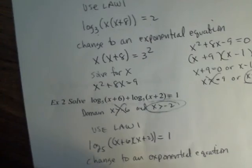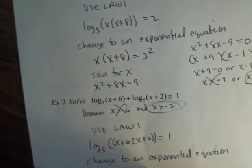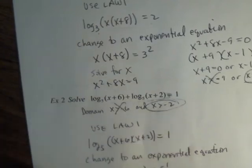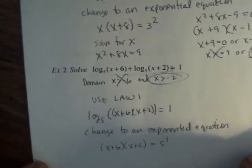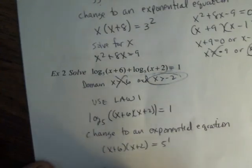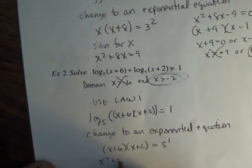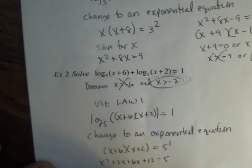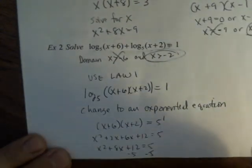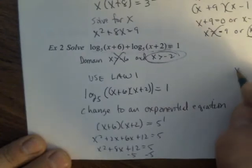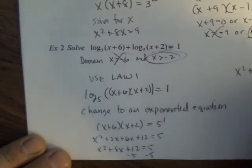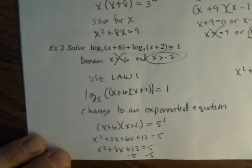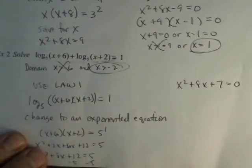Change to an exponential equation. So, x plus 6 times x plus 2 is 5 to the first power. Then now I'm going to solve. So I do my FOIL method here. x squared plus 2x plus 6x plus 12 is 5. x squared plus 8x plus 12 is 5. Subtract my 5 from both sides. x squared plus 8x plus 7 is 0.